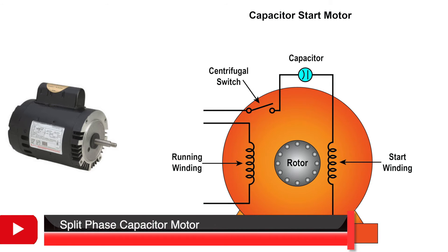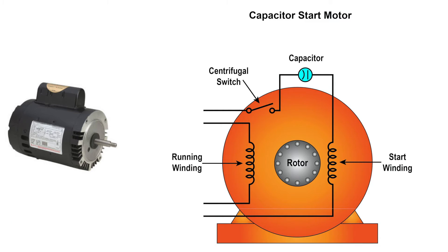Split phase capacitor motors have a capacitor connected in series with the start winding, which creates a phase shift of approximately 80 degrees between the start and run winding. This is substantially higher than the split phase motor and therefore results in a higher starting torque.